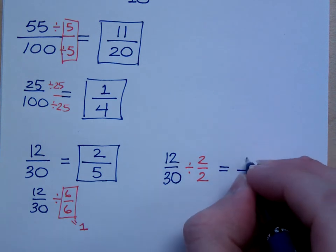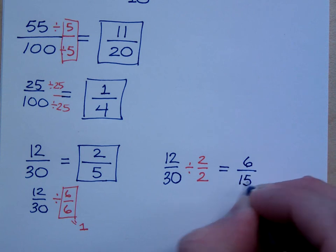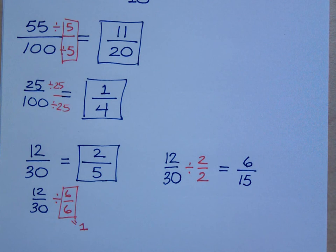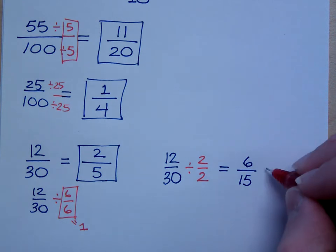So 12 divided by 2 is 6, 30 divided by 2 is 15. But these guys also have something in common, and Dennis, you were saying they had what in common? They have a 3 in common, so I'm going to divide by 3, right? No, I'm not going to divide by 3.